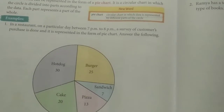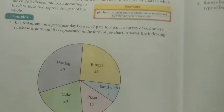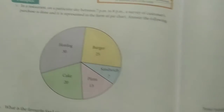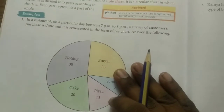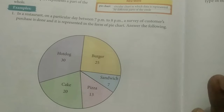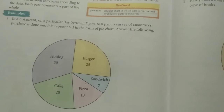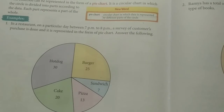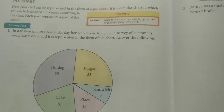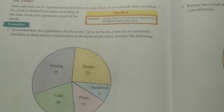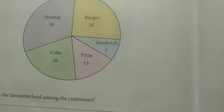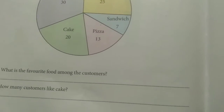In this section on Data Handling, we have two parts: bar graph and pie chart — both very simple. Here is the first pie chart example: in a restaurant, between 7 p.m. and 8 p.m., a survey of customer purchases was done and represented in the form of a pie chart. Answer the following questions.